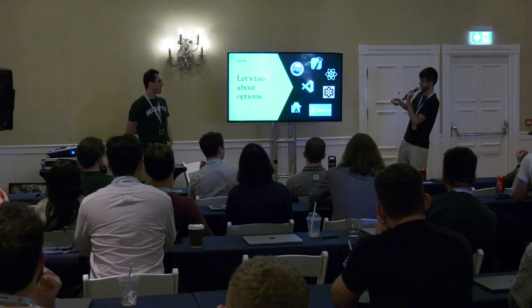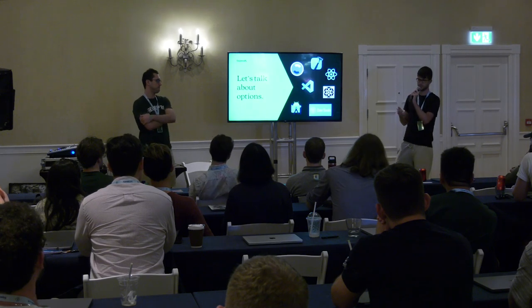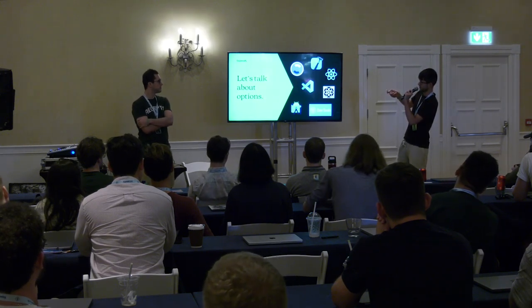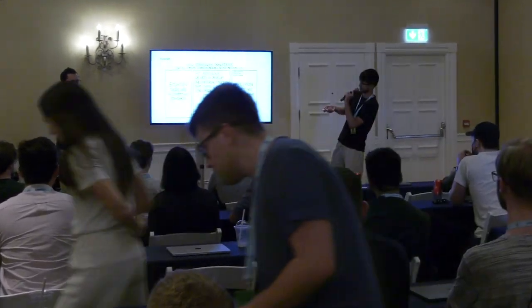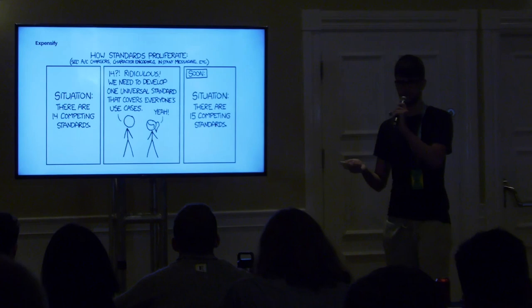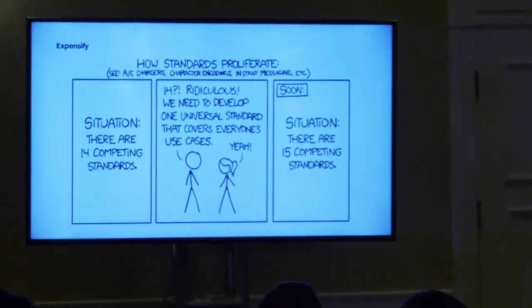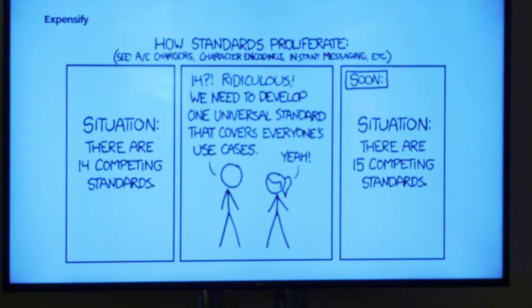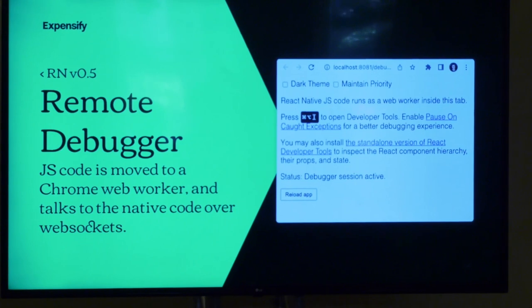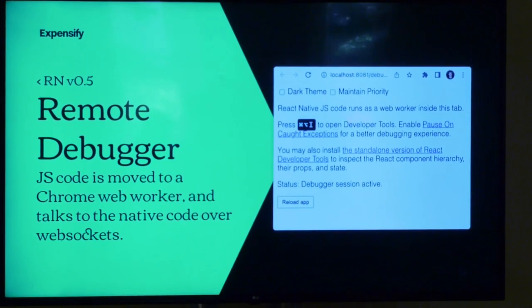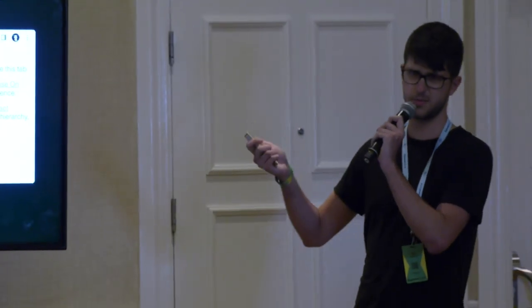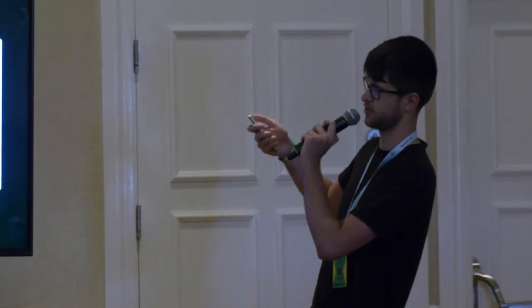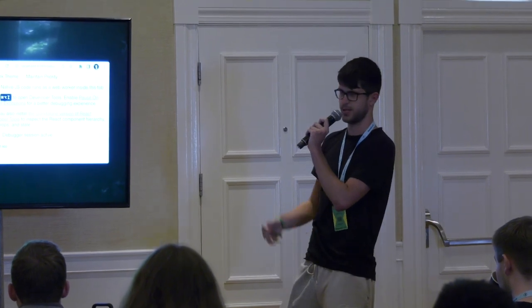This is like the XKCD competing standards meme — you've got 14 tools, someone says 'this doesn't work for us, let's make our own,' and now you've got 15. But there's actually a good history behind it. The first tool that arrived is the remote debugger. The earliest archive docs I found are from version 0.5.